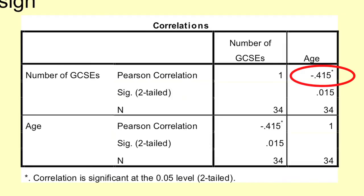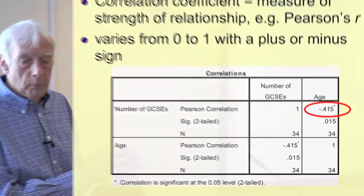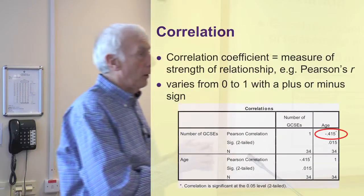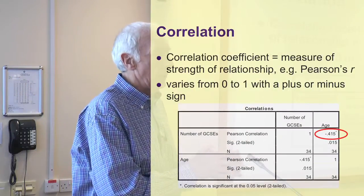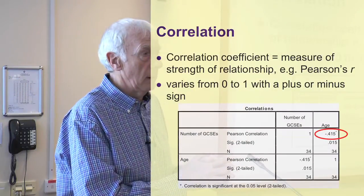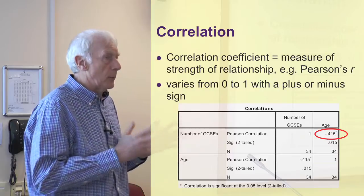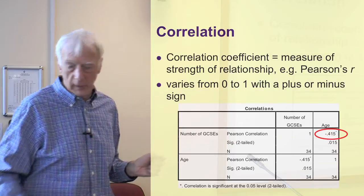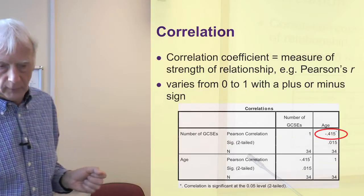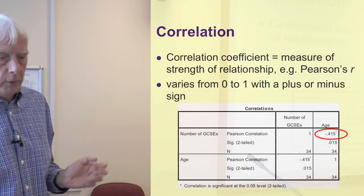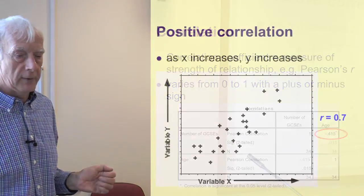I've circled the actual correlation figure in the top right box. In this case, Pearson's correlation for the relationship shown on the scatter plot — number of GCSEs versus the age of the student — comes out as minus 0.415. Let's go on to look at what that means and how to interpret those different values.